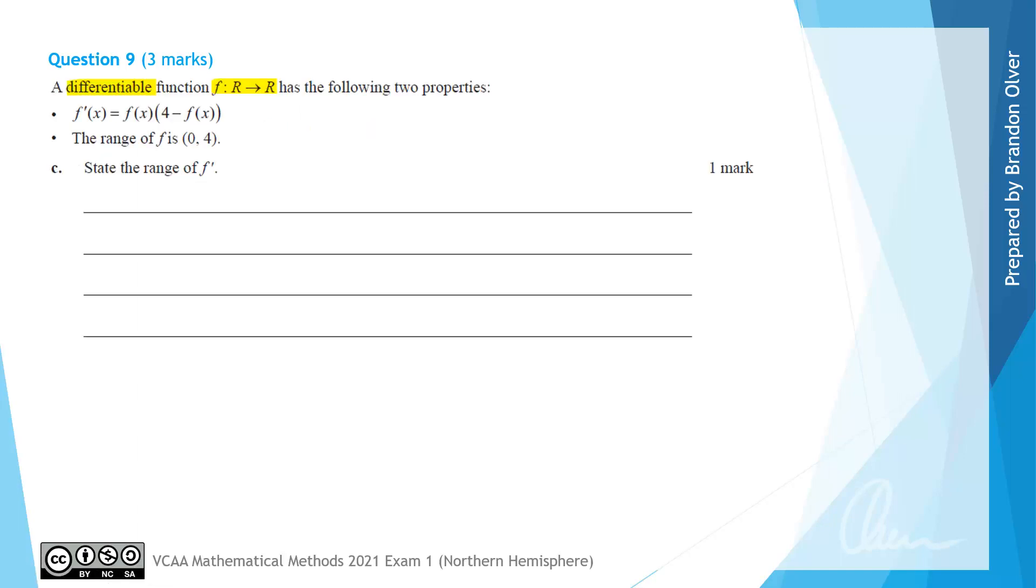For part C, it asks us to state the range of f'(x). So I'll actually start by just writing down the answer, and then I'll go through how to reach that conclusion. So the range of f' is going to be 0 not included to 4, and the 4 is actually going to be included. So that is the answer to part C.